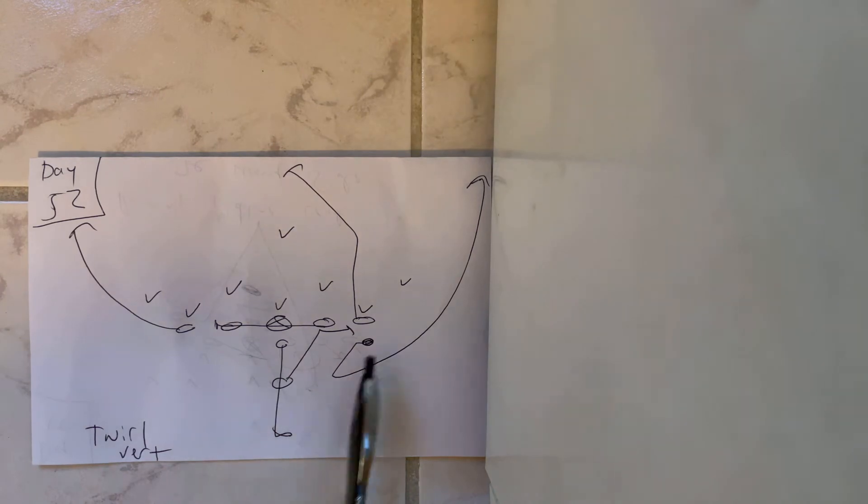Alright, so twirl vert means you're going to put the A back on the right side. He's going to be shoulder width apart, about a yard behind the end. And what's going to happen is, if you call twirl vert right, or twirl right vert, he's going to hammer step.